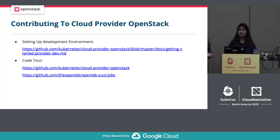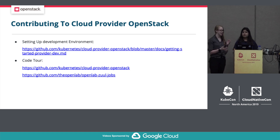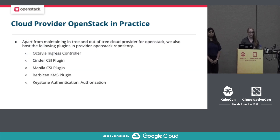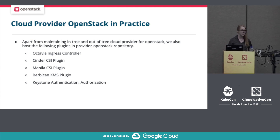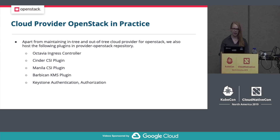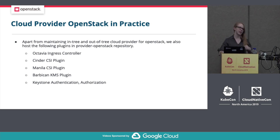In addition to the in-tree and out-of-tree cloud providers, we have a variety of plugins. There's an Octavia Ingress controller — it's a controller and not an actual load balancer service; it helps manage all of them together. Octavia is the OpenStack project that uses LBaaS for this. For storage, Cinder is the block storage project in OpenStack and Manila is the file system service. Depending on what you want for storage, you could use either one of those plugins.